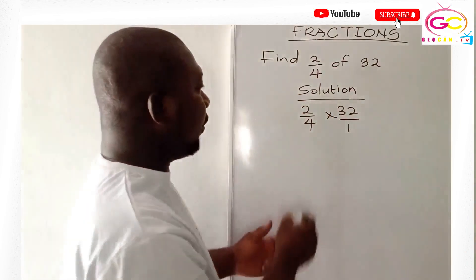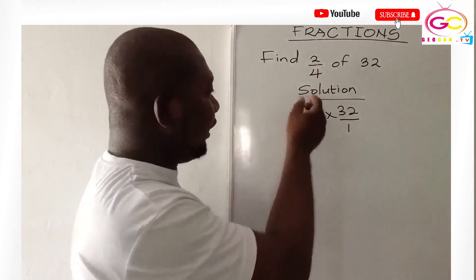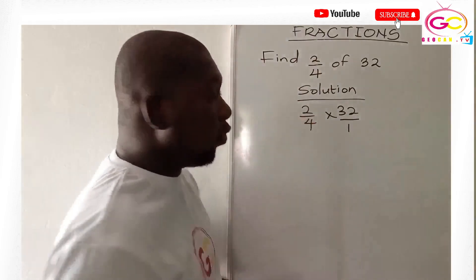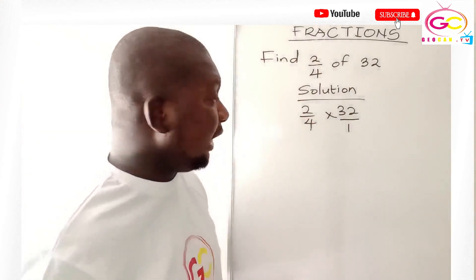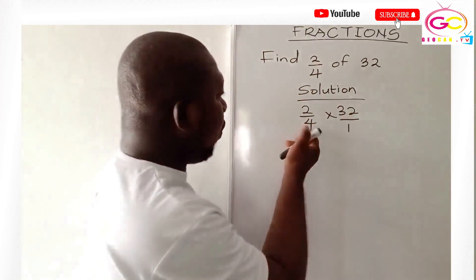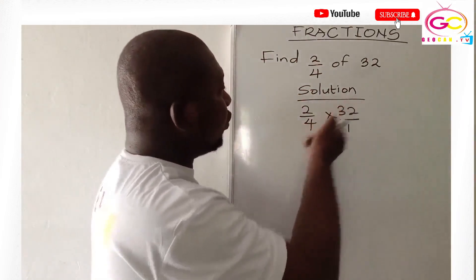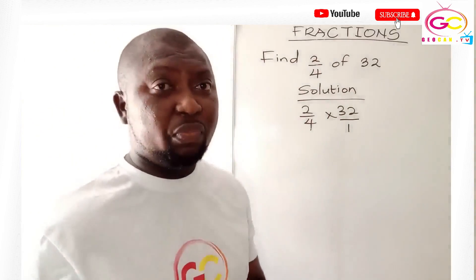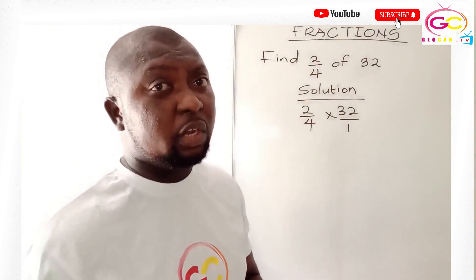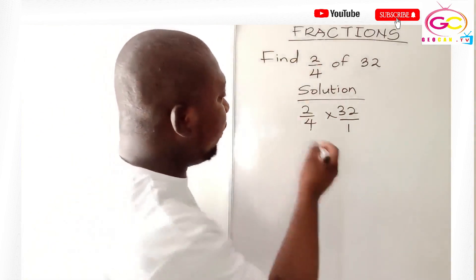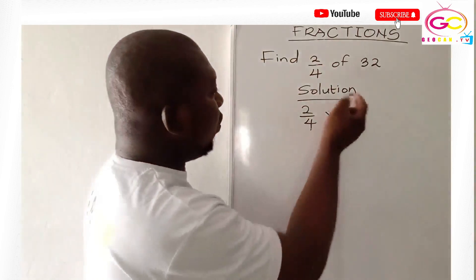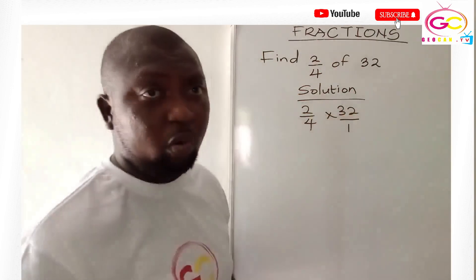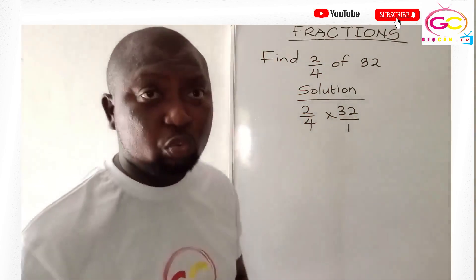With this, we can do a cancellation vertically. Two will go into four, or four will go into 32. You just look at the question and pick whichever cancellation will be easier. Four going into 32 will be easier for us here.